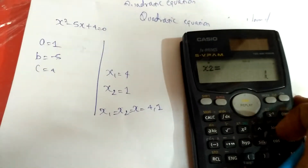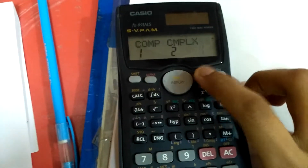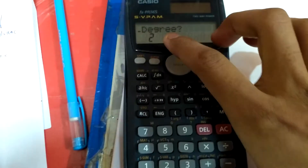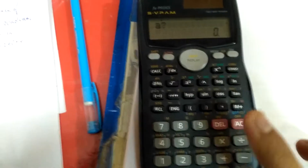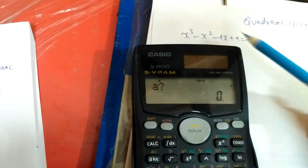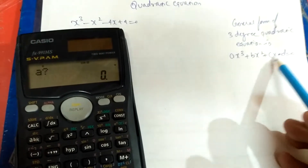If you want to solve a quadratic equation of 3 degree, I have already written a question here. So you have to again press this mode button 3 times to get back into equation mode, skip this and then press 3. This time we are solving a 3 degree quadratic equation, so we will press 3. The question is x cubed minus x squared minus 4x plus 4 equal to 0, and the general form of a 3 degree quadratic equation is ax cubed plus bx squared plus cx plus d equal to 0.